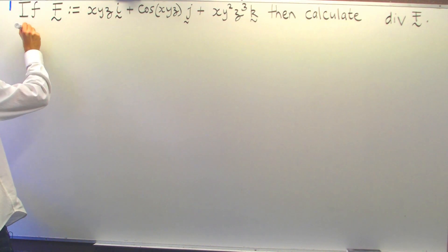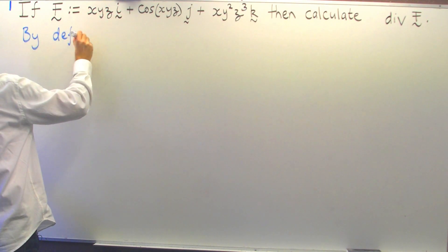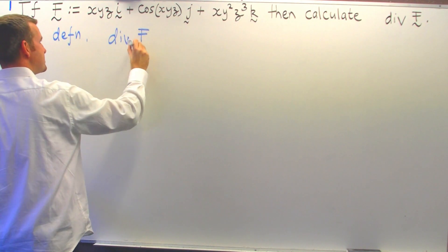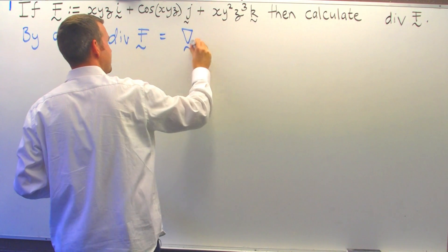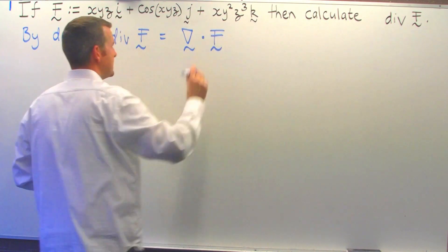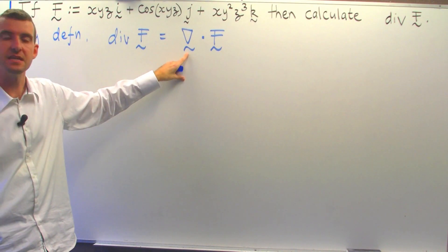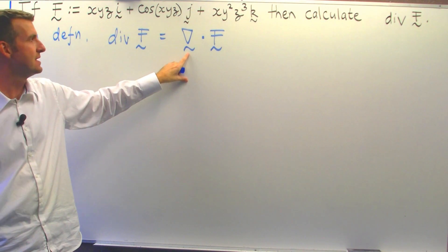By definition, the divergence of a vector field is just the dot product of these two vectors. Now, this is known as the del operator. It's not really a vector, it's a symbolic vector.